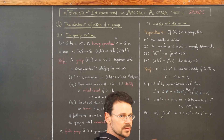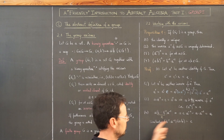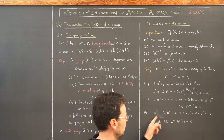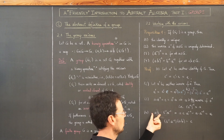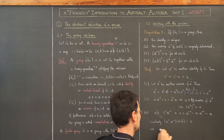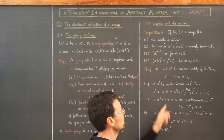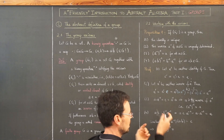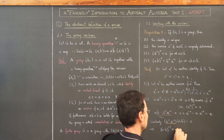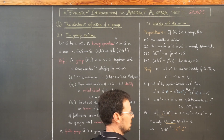Because of associativity, we can drop all parentheses. Similarly, b⁻¹·a⁻¹ composed with a·b also gives the identity. That means we've found an element that, composed with a·b, gives the identity in both directions — by property 2, since inverses are uniquely determined, we've found the inverse, and here it is.